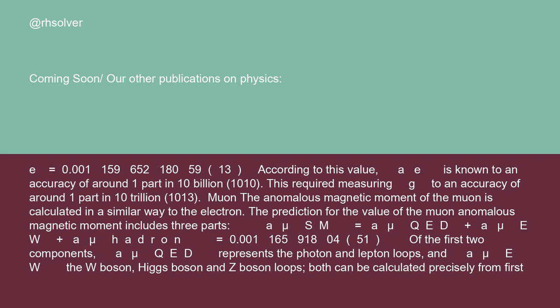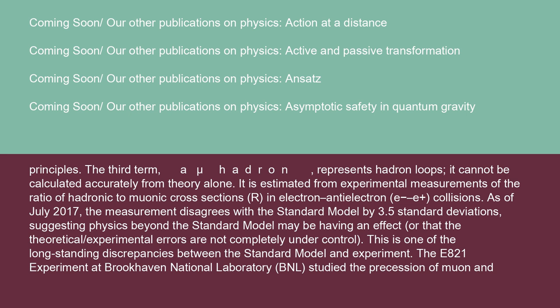Of the first two components, a_μ^QED represents the photon and lepton loops, and a_μ^EW the W boson, Higgs boson, and Z boson loops. Both can be calculated precisely from first principles. The third term, a_μ^hadron, represents hadron loops.